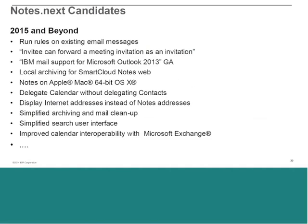With the known-next candidates, we've got some key items focused on running rules on existing mail messages, which has been asked for a while. Invitee forwarding — being able to forward a meeting invitation as an invitation without having to involve the chair or ask via separate communication channels. You can just immediately forward on the meeting invite, and it will turn into an invite for your recipient, delegating calendar without delegating contact. These are just a few of the highlights around some of the things we're looking at for Notes Next in 2015 and beyond.